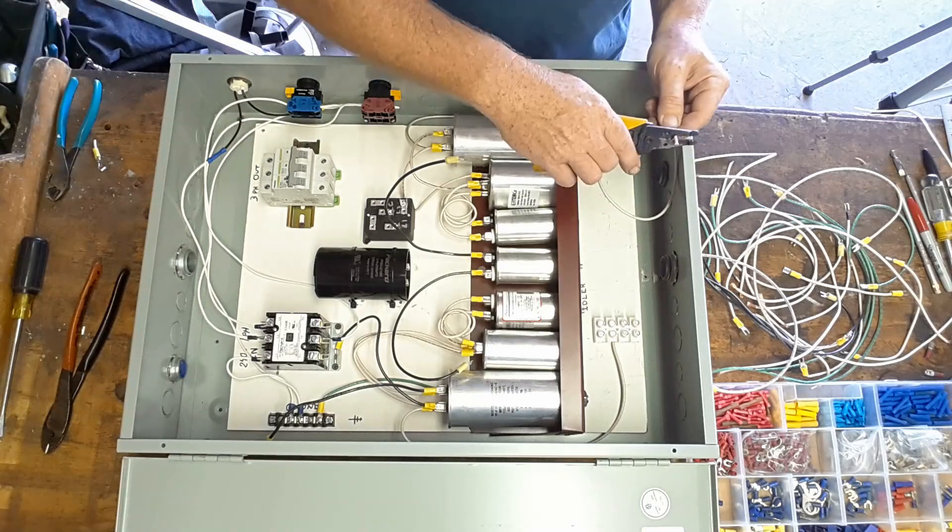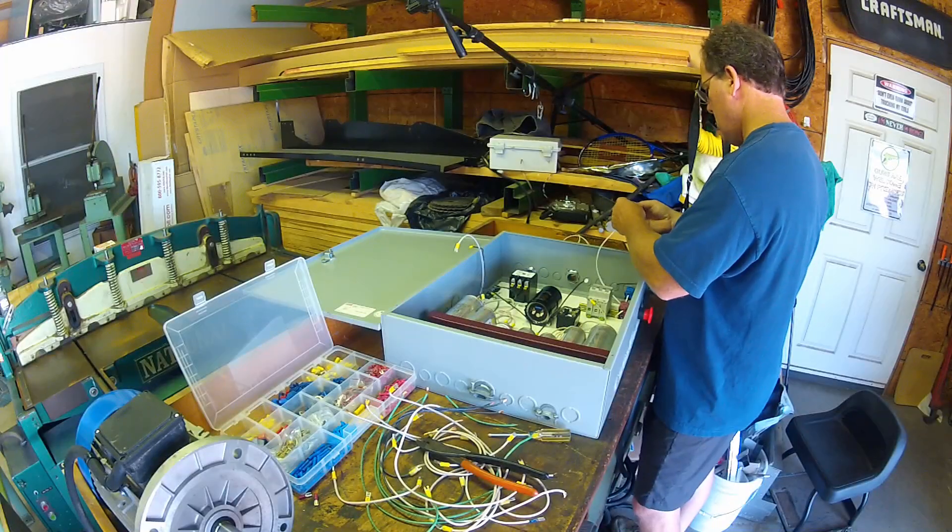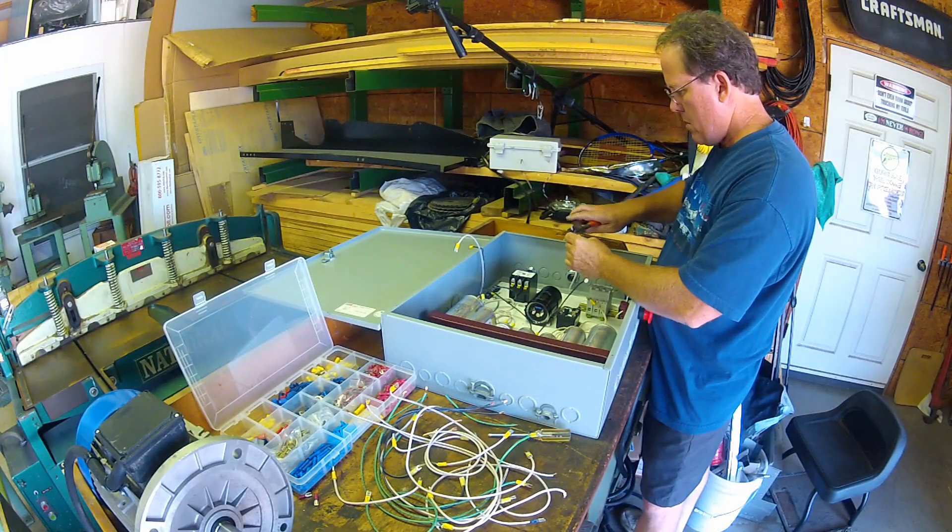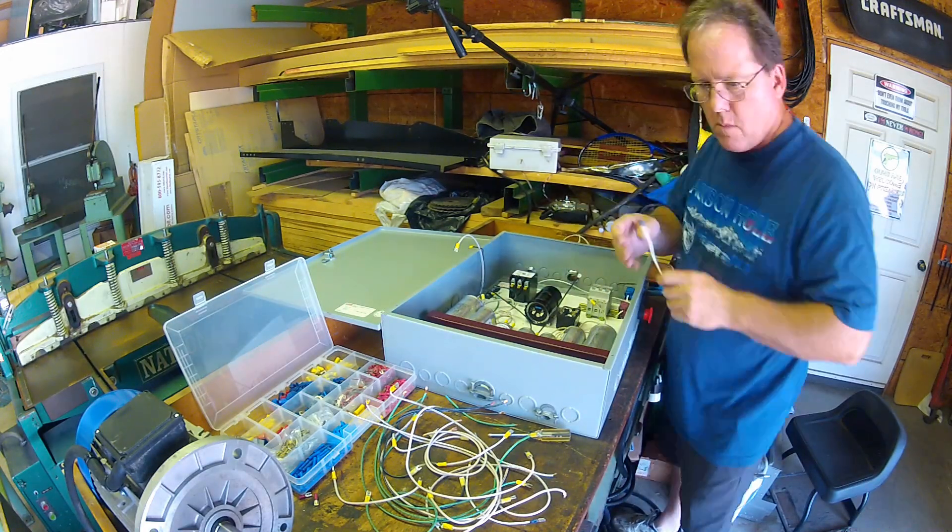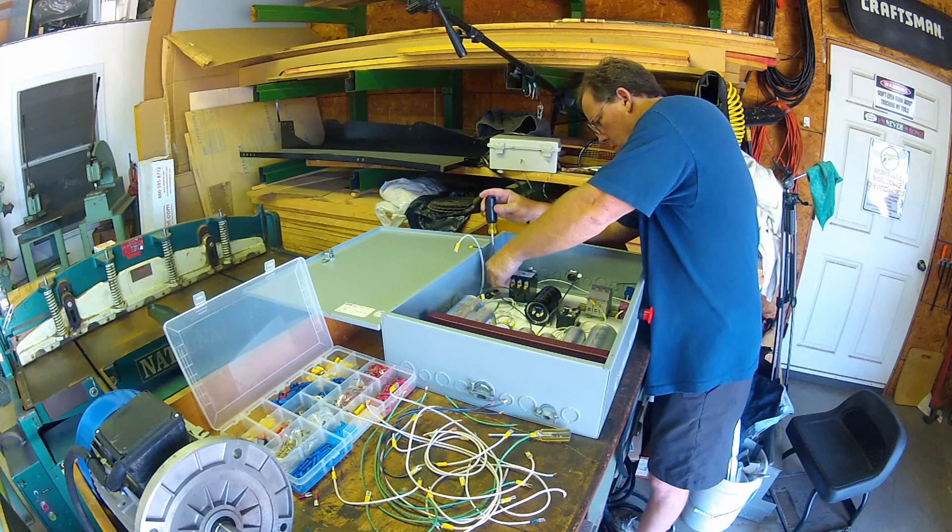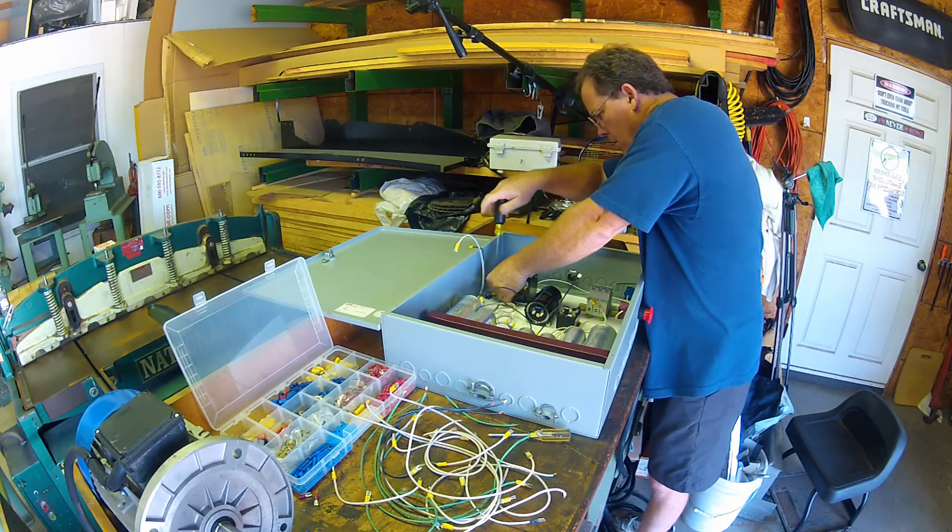With a final junction block added at the bottom I proceeded to wire it back together. At this point I wasn't doing anything different. The wiring schematic is exactly like what it's been in the previous two episodes. It's just organized differently.